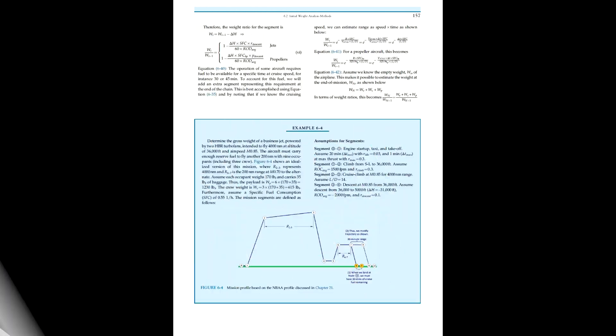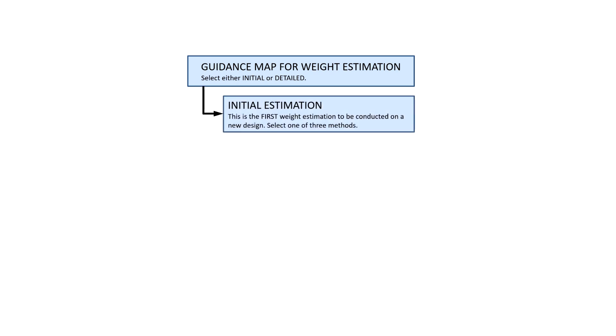This is a powerful method that we can use to estimate the initial gross weight of our airplane during the conceptual design phase. Aircraft weight estimation for this purpose requires two distinct procedures. We begin with an initial weight estimation, followed by a secondary weight estimation, also called detailed weight estimation.